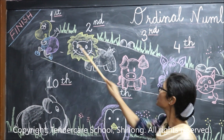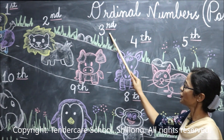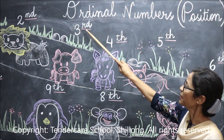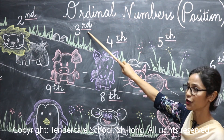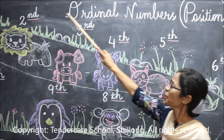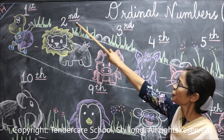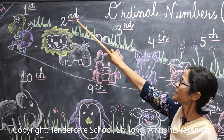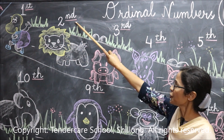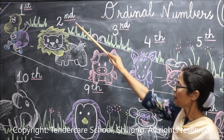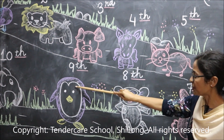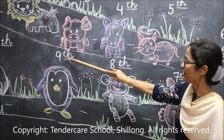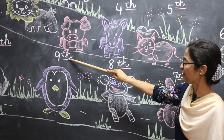Which animal is in the third position? The pig is in the third position. Which animal is in the second position? The lion is in the second position. Which animal is in the ninth position? The penguin is in the ninth position.